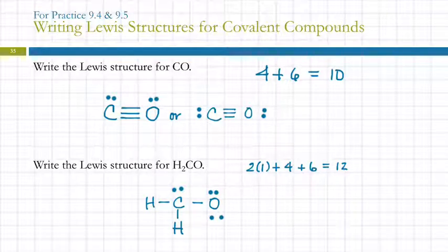Oxygen is the one that needs more. So we're going to share carbon's lone pair. You could try sharing oxygen's lone pair, but then you'll find out that now carbon has too many and you'll have to move the lone pair over anyway. Some of this will be trial and error. So I just moved a lone pair to a bonding pair. I'm not changing the number of electrons.